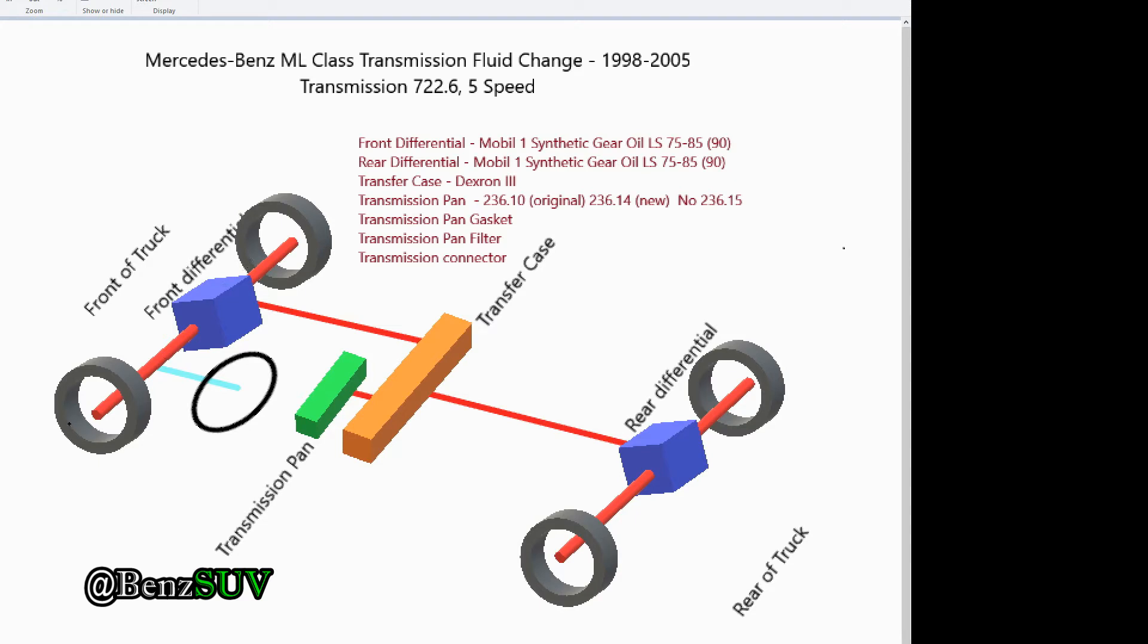The front axle is connected to a differential, which is connected to a transfer case, which is connected to the rear differential as well and the main transmission drivetrain that's coming in from the engine. There are four areas that you should drain.